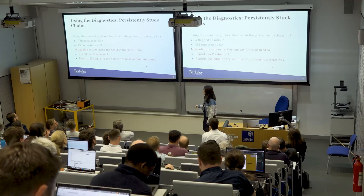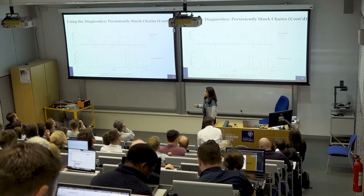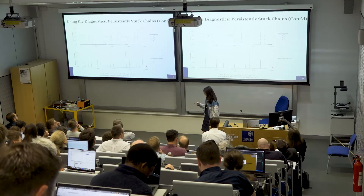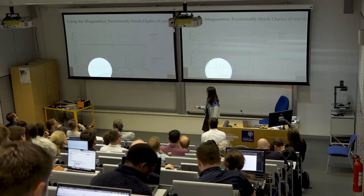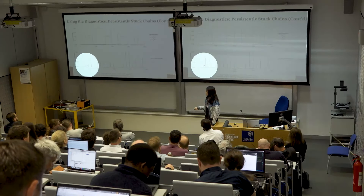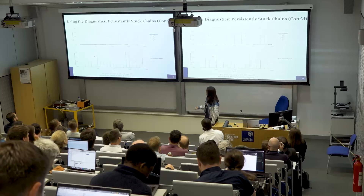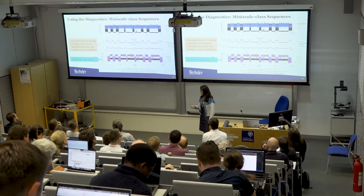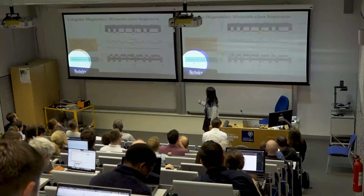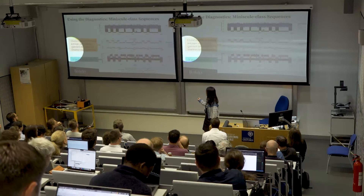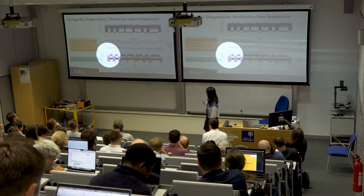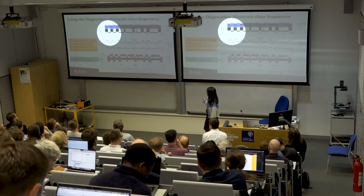For stuck-chain behavior, the moving standard deviation of a class parameter is zero for the entire chain. For miniscule class diagnosis, a clustering plot identifies the miniscule class by hard assignment shown with black dots, and a DI plot confirms miniscule class behavior when DI is close to 100.